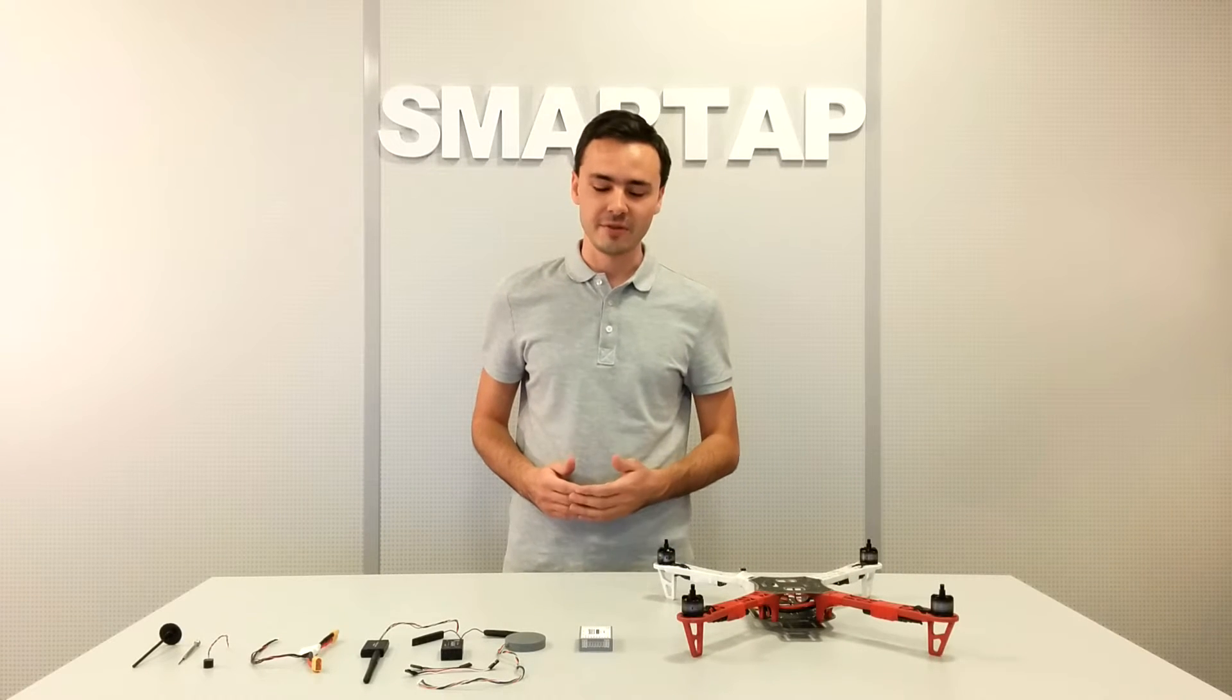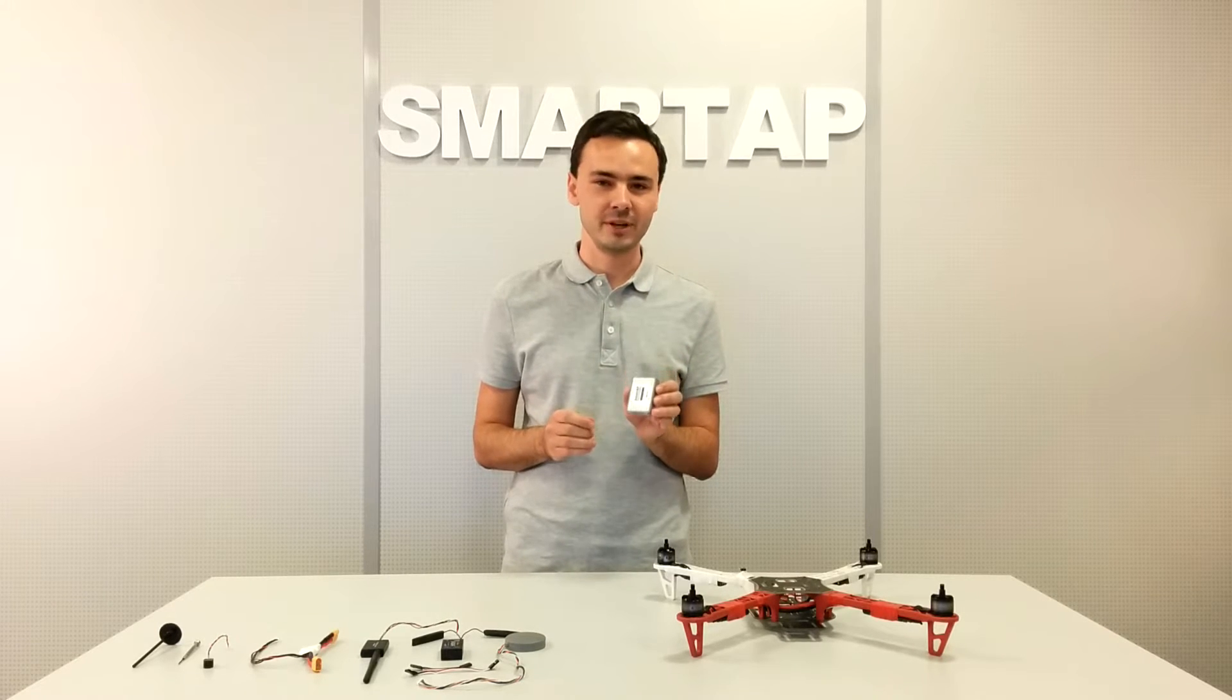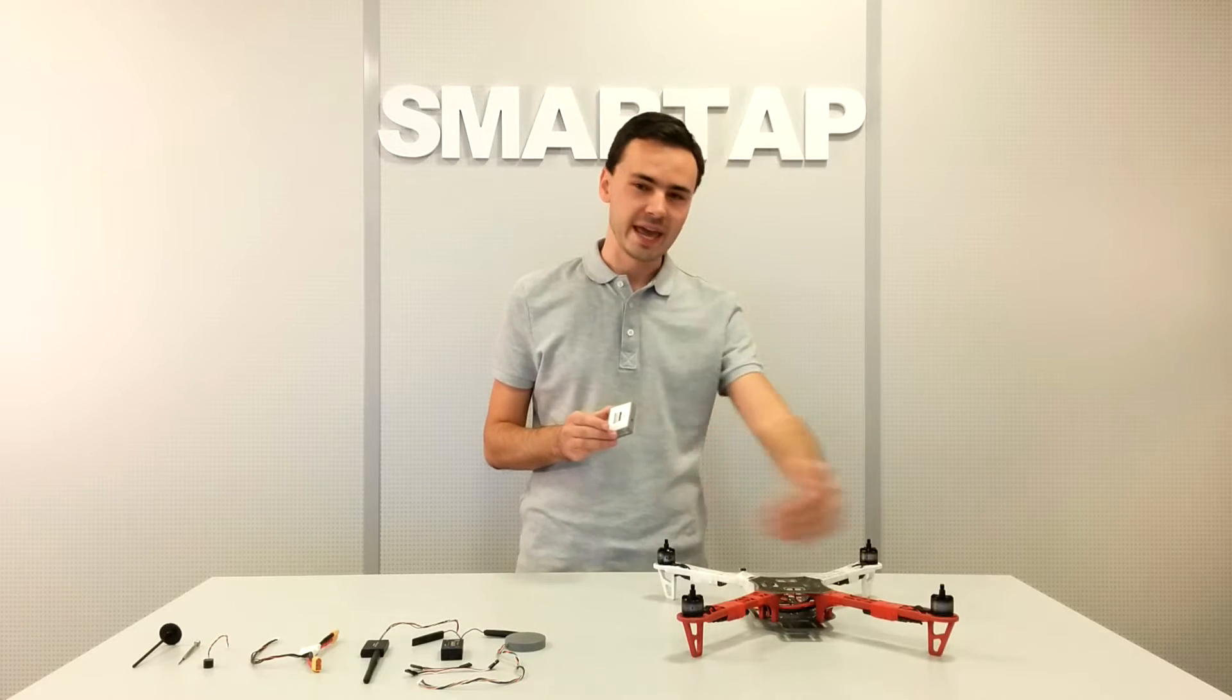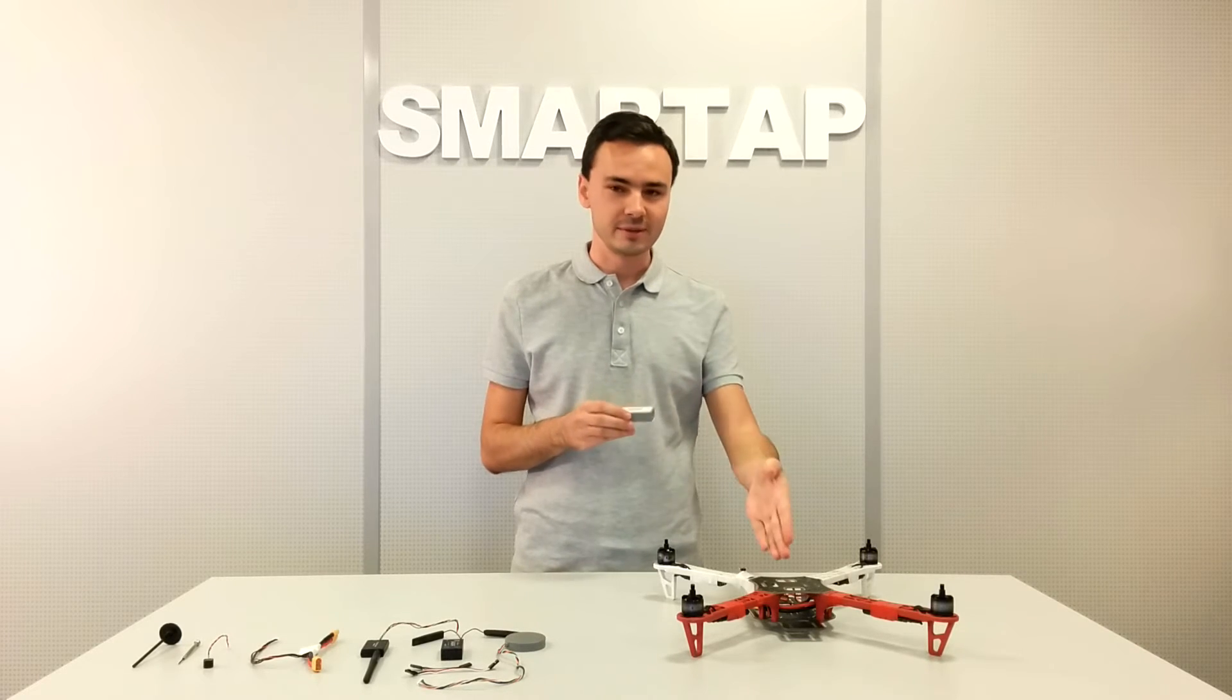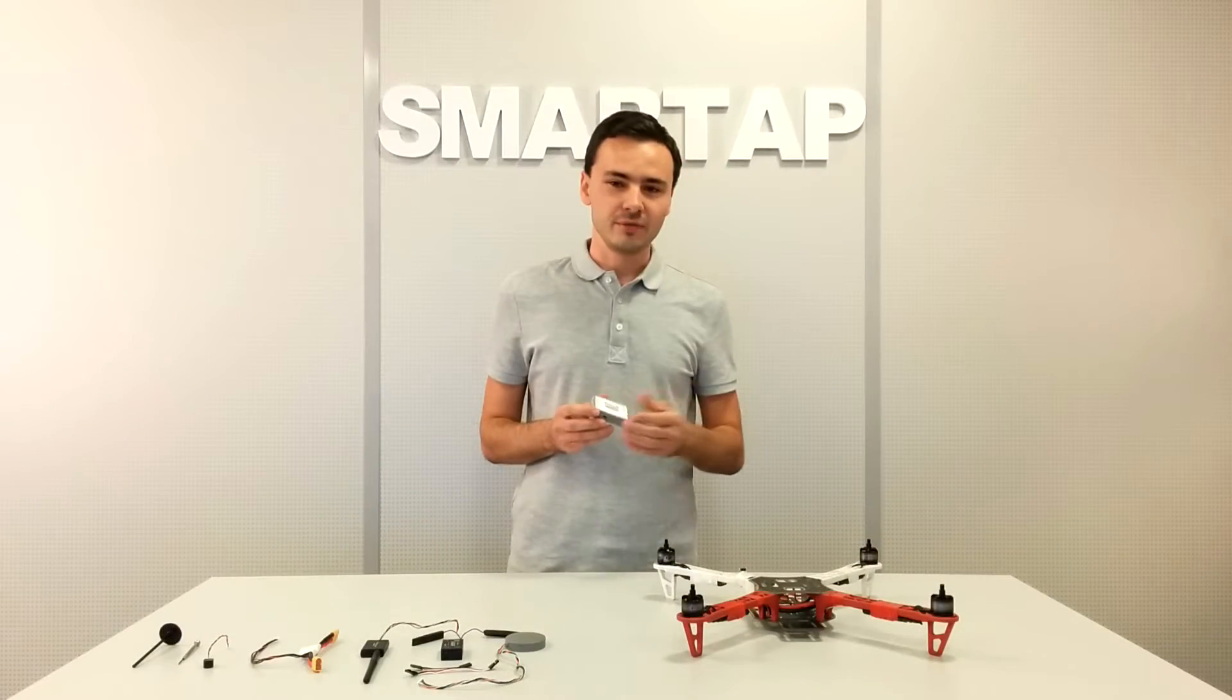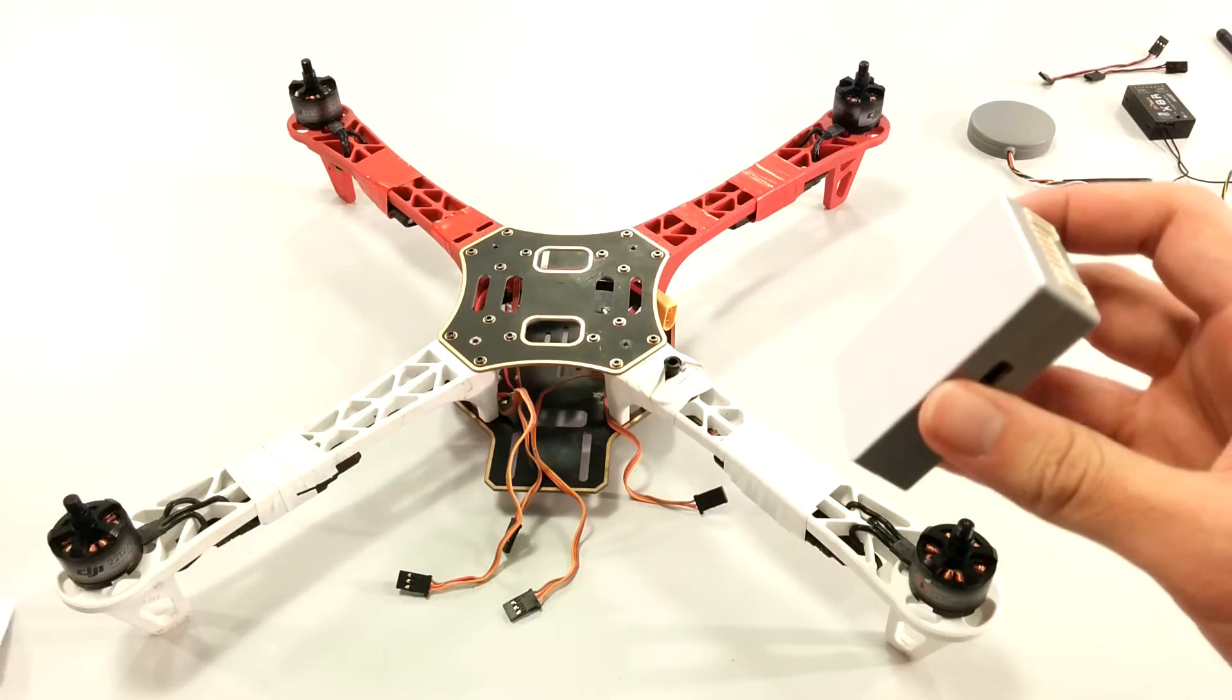First of all, let's mount the autopilot. You can place it any orientation you want, it can be configured later in the software. Just make sure to align the device with X and Y axis of the airframe as precise as possible, and also make sure to mount the autopilot as close to the center of mass as possible. I choose the default orientation and mount the flight controller with the front arrow facing forward. Next, remove the double-sided tape and attach the autopilot to the airframe top plate.